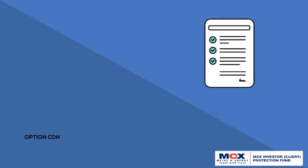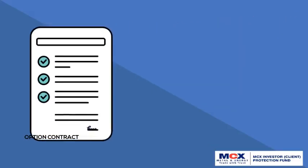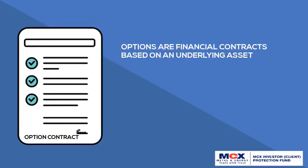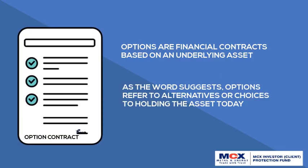Like any other derivative contract, options are financial instruments based on an underlying asset. Options refer to choices to hold the commodity today — so instead of buying or selling the commodity today, we defer the purchase or sale of that commodity to a future date.